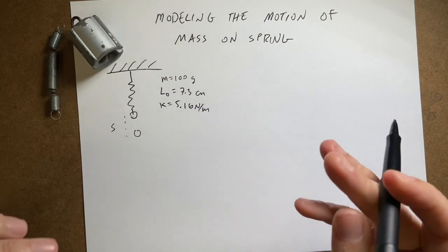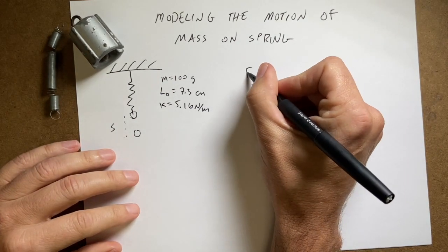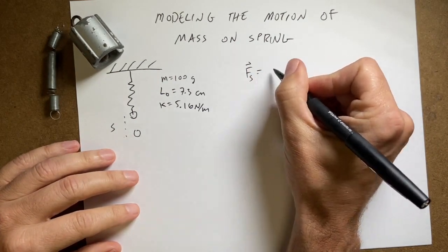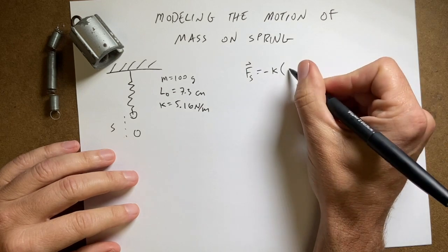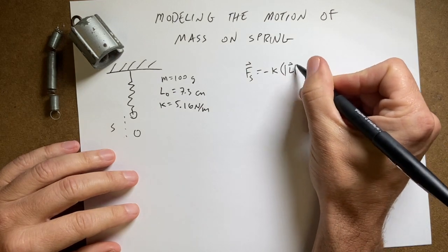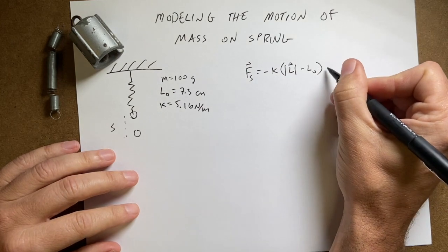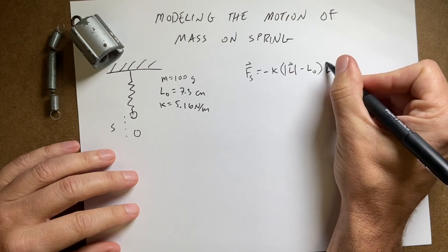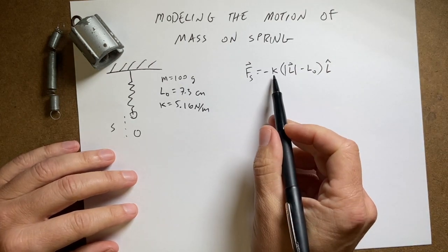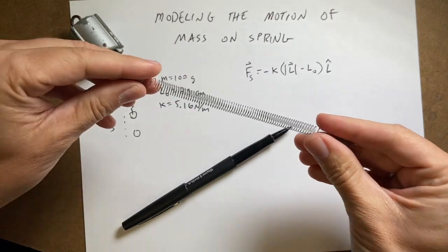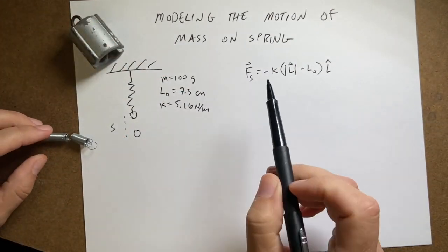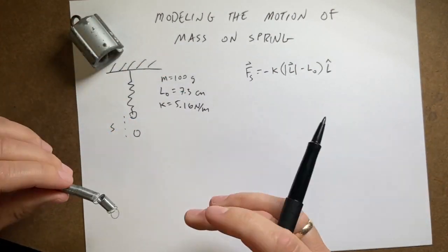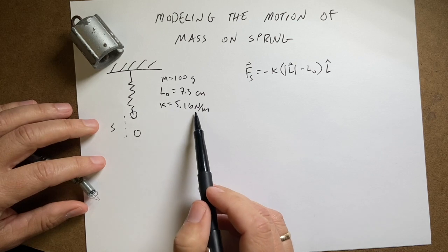And in fact I got this model. I said the force due to the spring is negative k times the magnitude of L minus L0 times L hat. So in this case k is the stiffness of the spring and I measured that by stretching at different distances and finding the force and I got 5.16 newtons per meter.